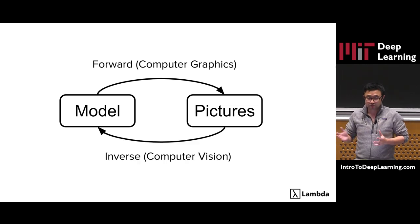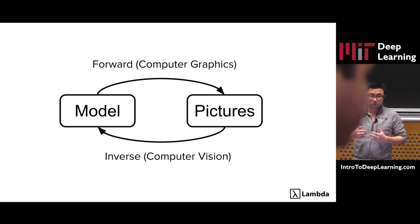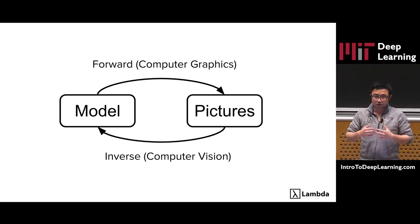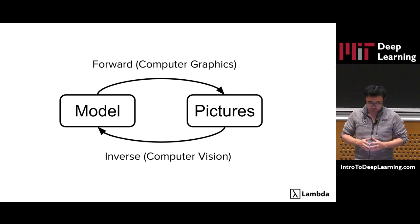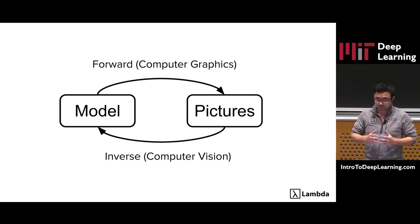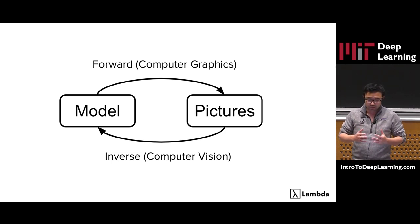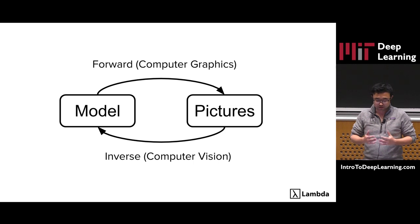The opposite of this problem is the inverse rendering. It studies the problem that given some images, we are trying to work out what are the 3D scenes that were used to produce this image. The inverse rendering is closely related to computer vision with applications such as 3D reconstruction and motion capture.